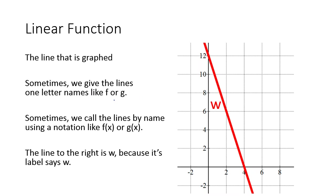Sometimes we give lines one-letter names, like f or g, or in this case w. We're going to name that line w. Sometimes we call the lines by name using notation like f of x or g of x. The line to the right is w because its label says w.